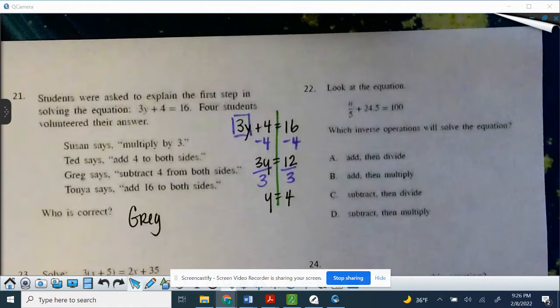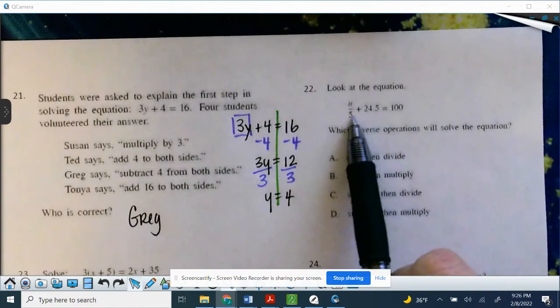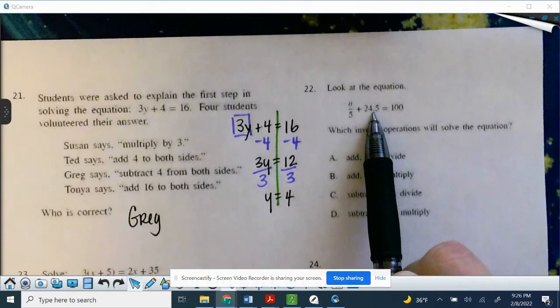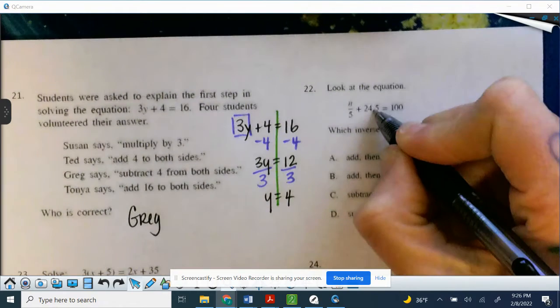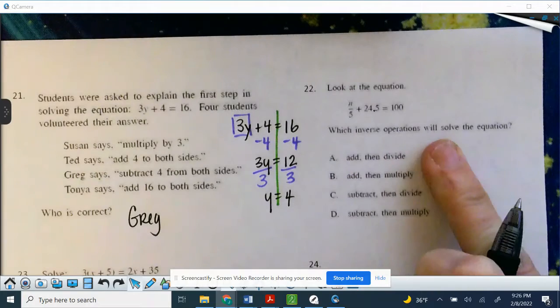All right, so number 22, look at the equation. So n over 5 plus 24.5, don't panic even though it's a decimal, equals 100. Which inverse operations will solve the equation?